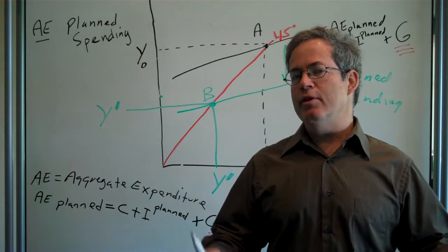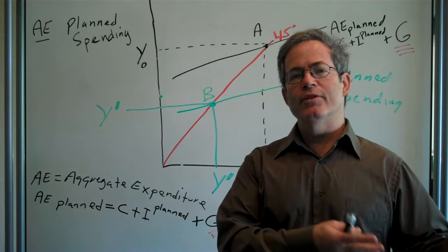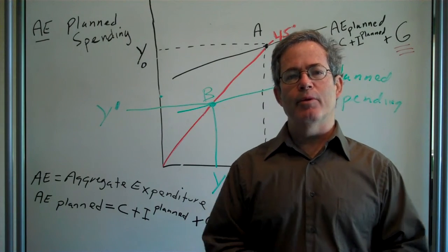Government expenditure is government expenditure on aircraft carriers, bombs, schools, both at the state and local level and at the federal level.